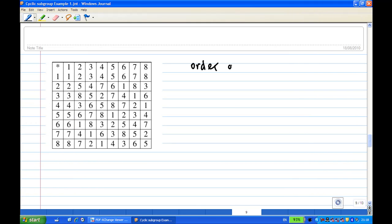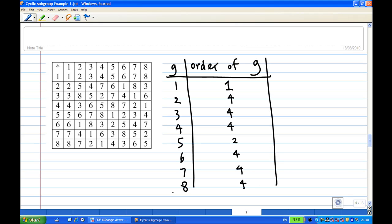So the order of G with each element. I'll make a table. G can be 1, 2, 3, 4, 5, 6, 7, 8. The order of 1 is 1, order of 2 is 4, order of 3 is 4, order of 4 is 4, order of 5 is 2, order of 6 is 4, order of 7 is 4, order of 8 is 4. And this is how you find the order of each element.